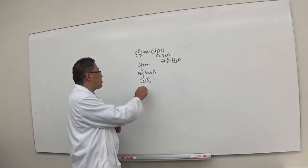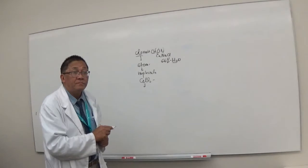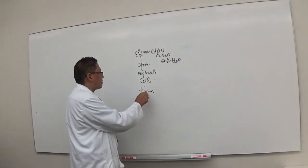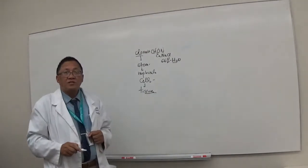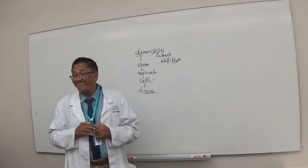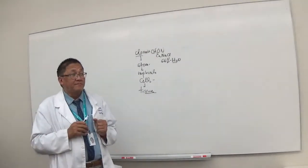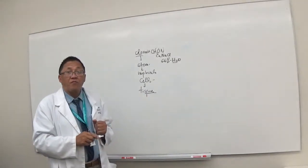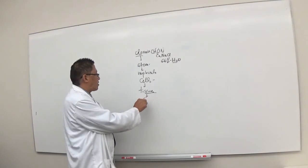Now when the cells group together, what do they form? Tissue. Very good. So a tissue is a group of cells. And then when tissues group together, what do they form? Organs.